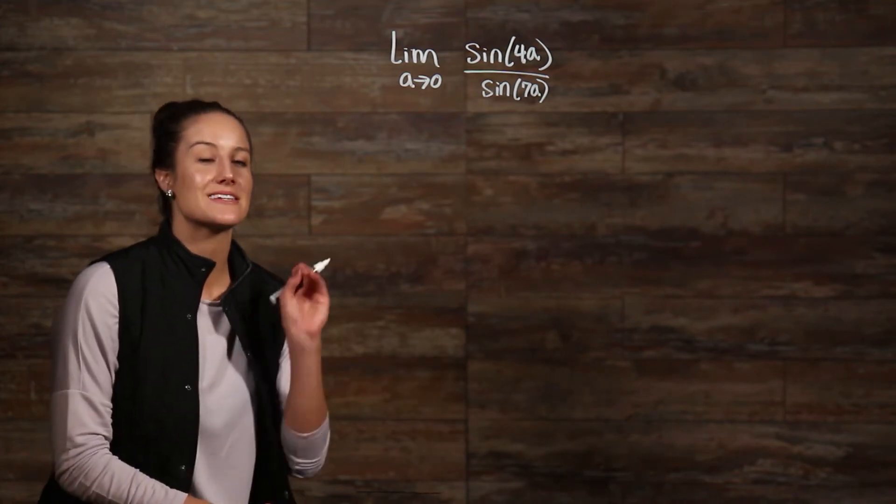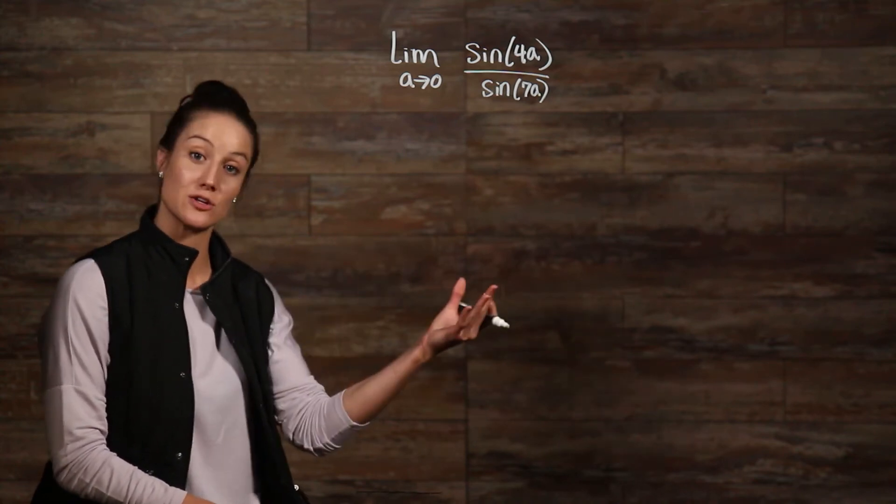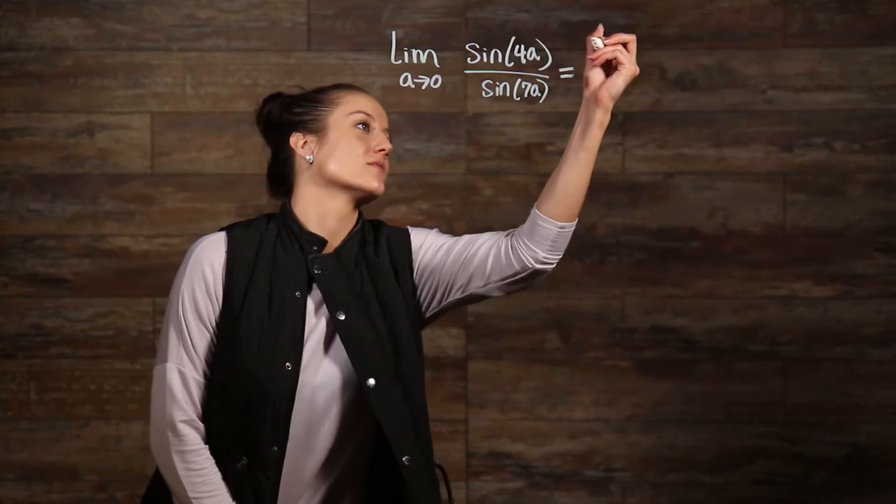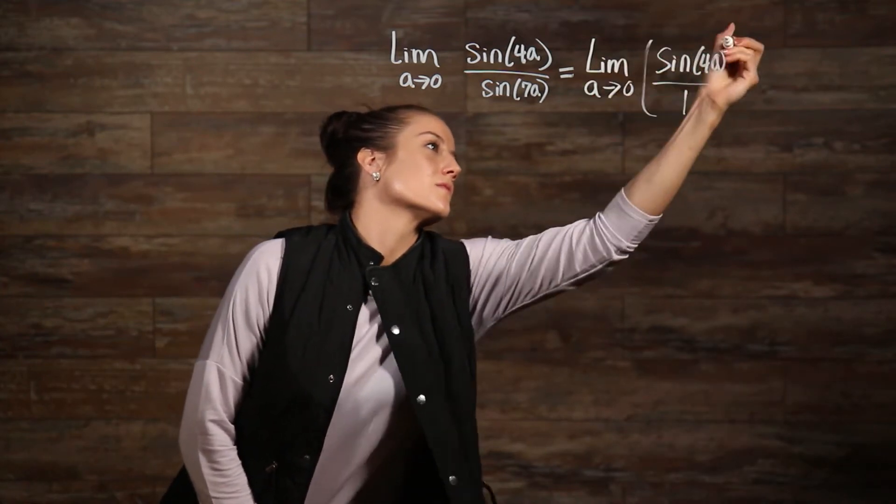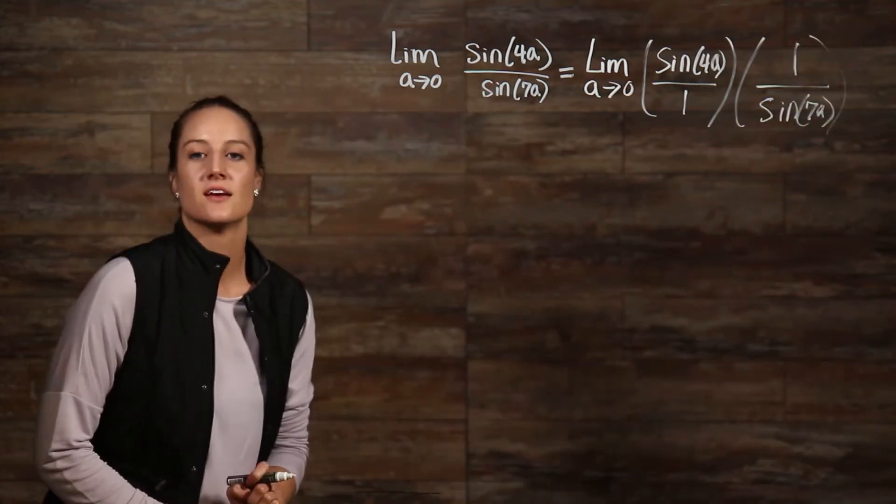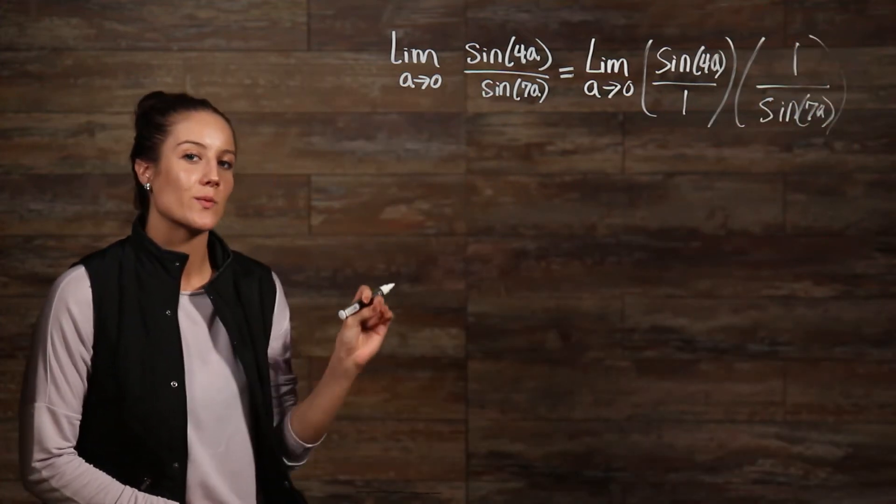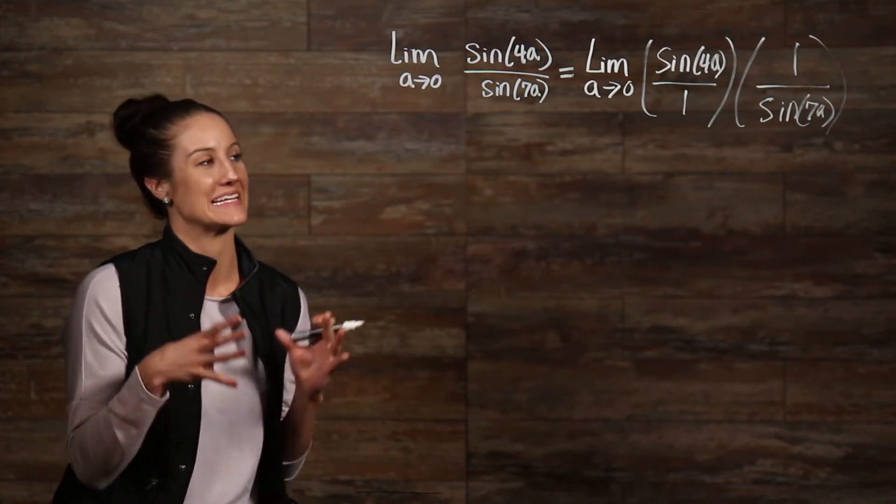Alright, let's separate this fraction into two separate fractions and take the limit, which we know we can do because of our limit rules. Now, once we get to here, we have to think of ways to make this look like the facts that we have so that we can simplify it.